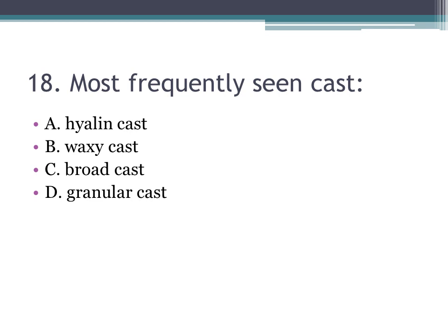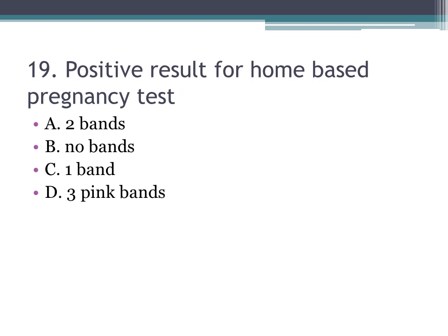How to differentiate upper UTI from lower UTI: lower UTI (cystitis) presents with WBC, bacteria, hematuria, mild proteinuria, and increased urine pH. Upper UTI (acute pyelonephritis) shows WBC casts and bacterial casts. Chronic pyelonephritis shows waxy and broad casts — because it is chronic.